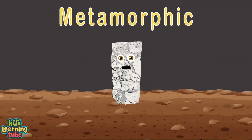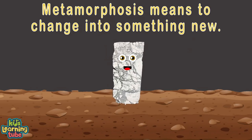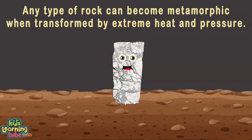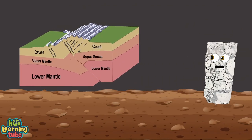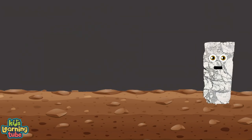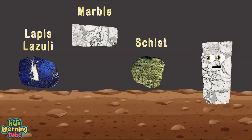I'm a type of rock called metamorphic — one of the main types of rock. Metamorphosis means to change, and I'm transformed by heat and pressure from existing rocks. Any type of rock can become metamorphic when transformed by extreme heat and pressure. Metamorphic rocks form deep within the earth's crust where temperatures and pressures are high. Examples of metamorphic rock include lapis lazuli, schist and beautiful marble.